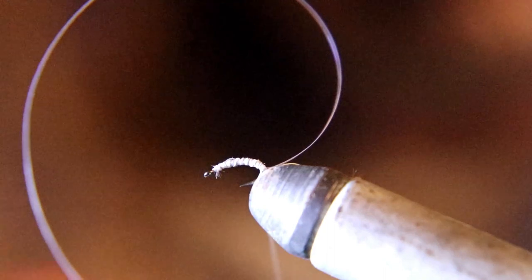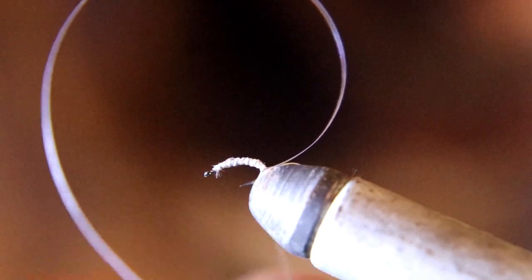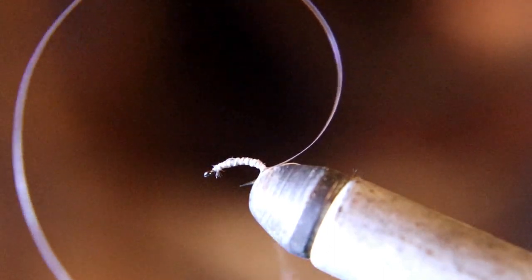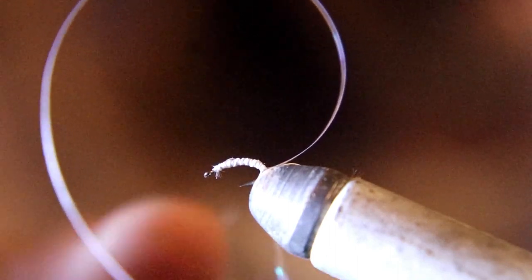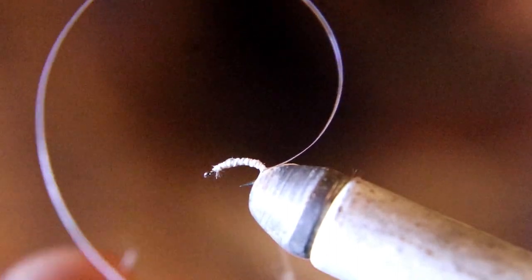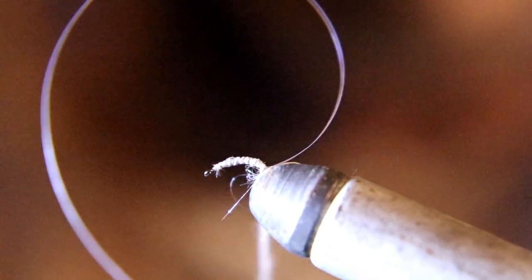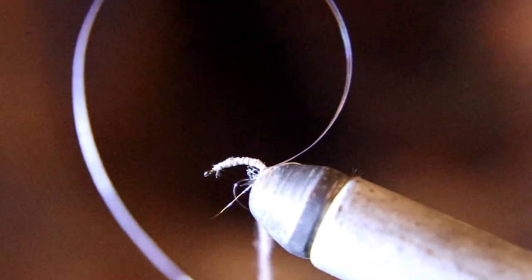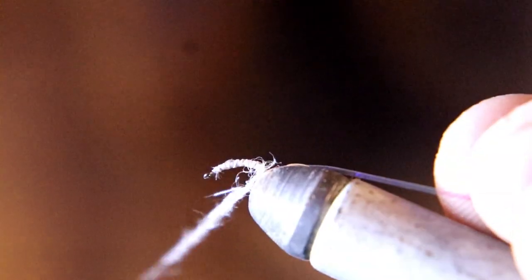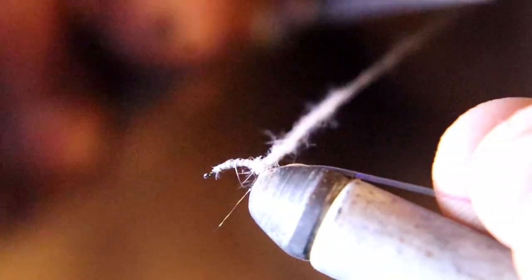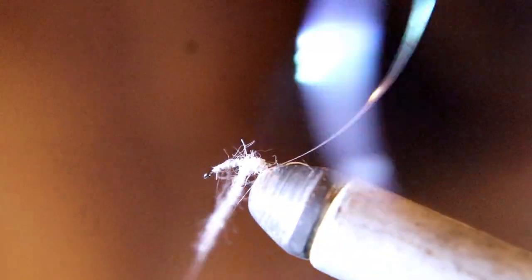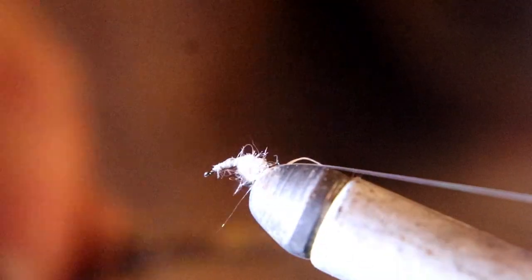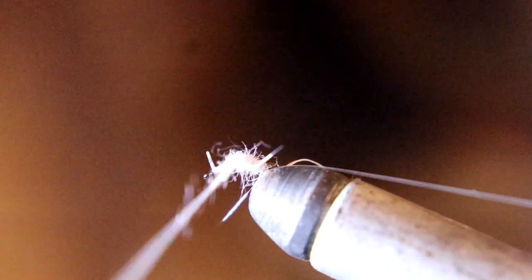Now I'm going to put dubbing on here. It's a white UV dubbing—I don't have the package it came in anymore, so I can't really show you what it is. It's white UV dubbing. We're going to put this on and we're going to dub this right up to the eye of the hook and leave a little bit of space to finish the fly so you don't crowd the eye.